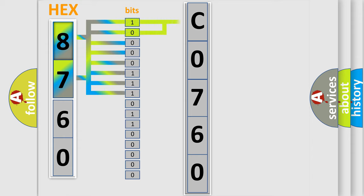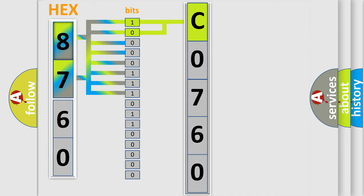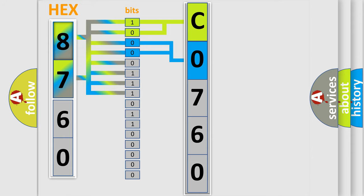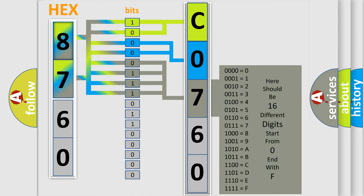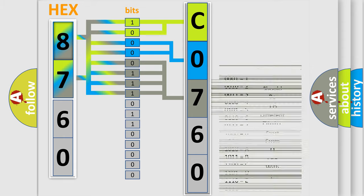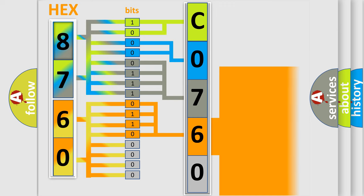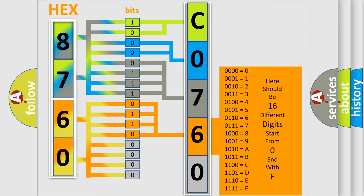By combining the first two bits, the basic character of the error code is expressed. The next two bits determine the second character. The last four bits of the first byte define the third character of the code. The second byte is composed of a combination of eight bits — the first four bits determine the fourth character, and the last four bits define the fifth character.